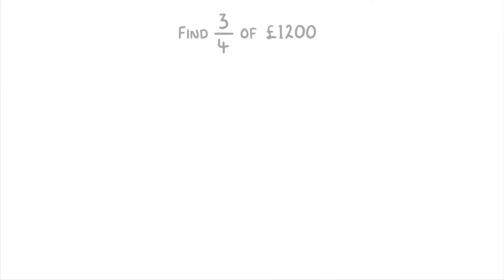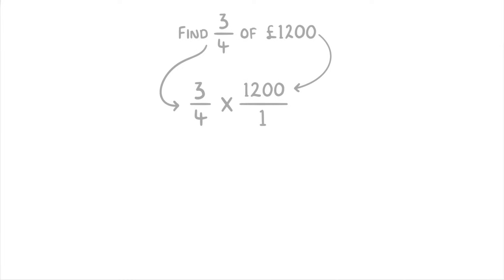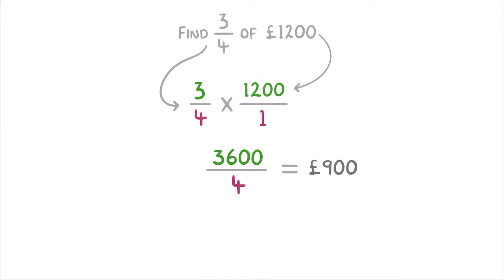Let's try another one. In this question, we're trying to find 3 quarters of 1,200 pounds. So the first thing we need to do is write an equation of 3 quarters times 1,200 over 1. Then to multiply them, we do 3 times 1,200 to get 3,600 as our numerator, and divide that by 4 times 1 to get 4 as our denominator. So the answer is 3,600 over 4, which is just 900 pounds.